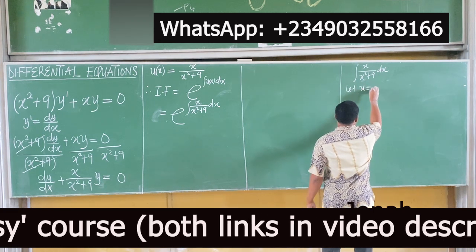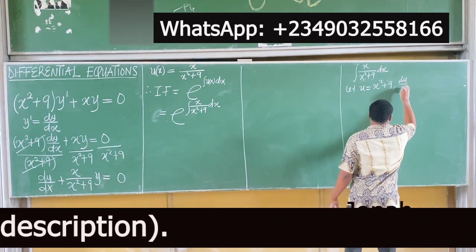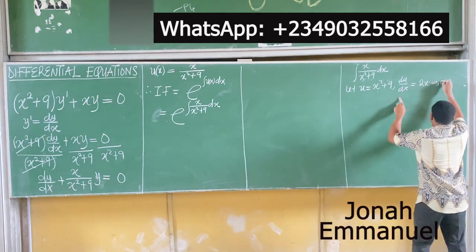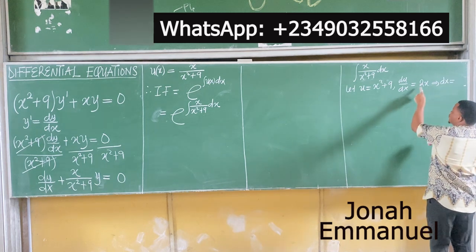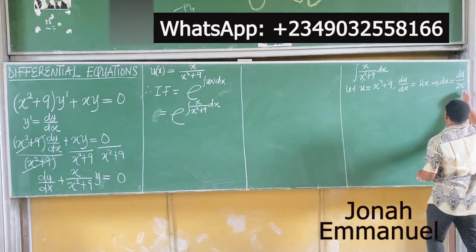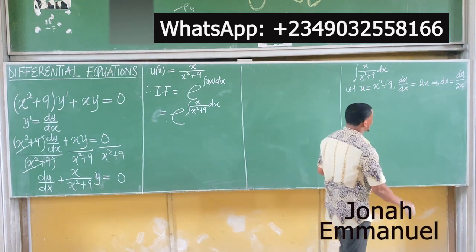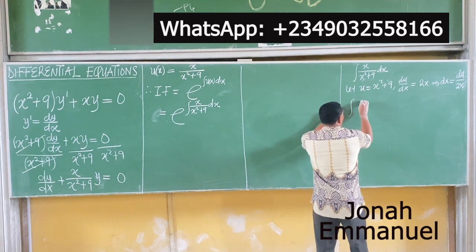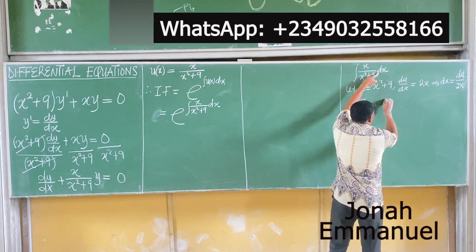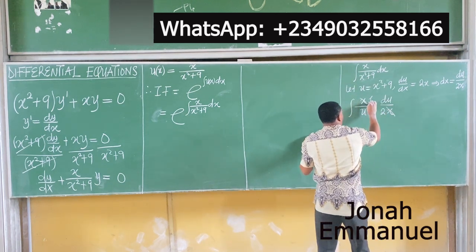Let u equal the denominator, x squared plus 9. Differentiate: du/dx equals 2x, so dx equals du over 2x. Substituting back, the integral becomes the integral of x over u times du over 2x. This x cancels this x, leaving 1 over 2 times 1 over u, du.